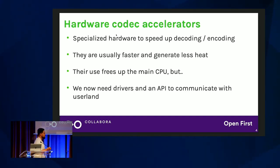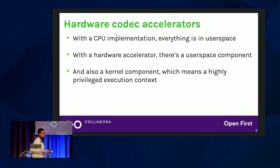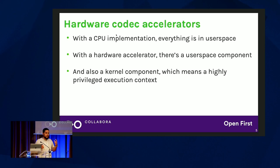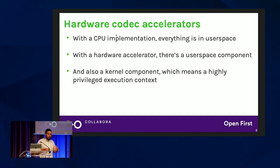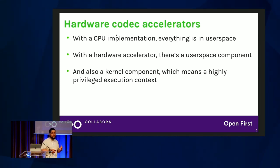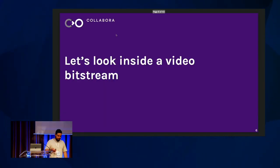The drawback is that now you need this thing. Whereas beforehand you could have everything running on the CPU, now you have hardware to drive, so you need a driver and an API to talk to this device. So whereas previously you only had a user space component, now you have both a user space component and a kernel component, which is obviously running with privileges.